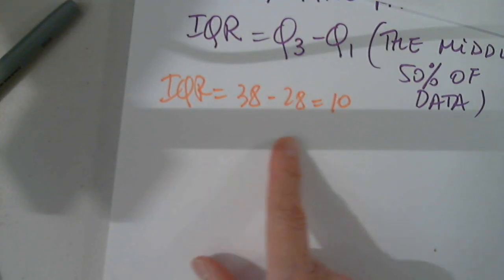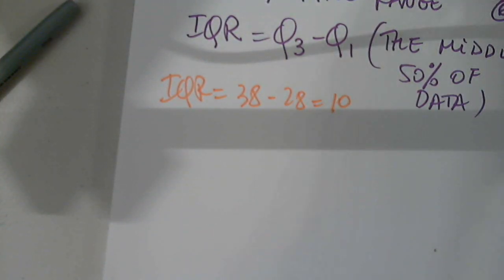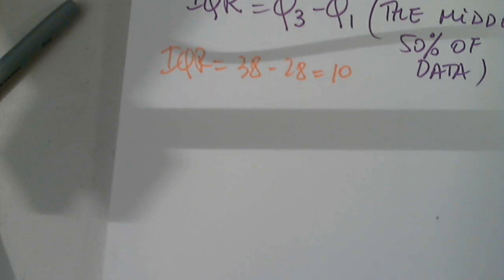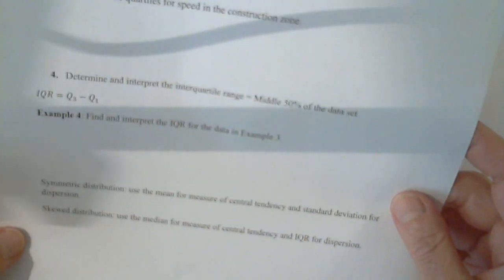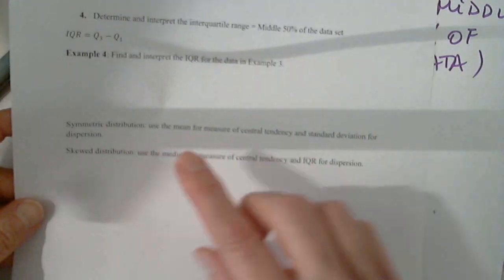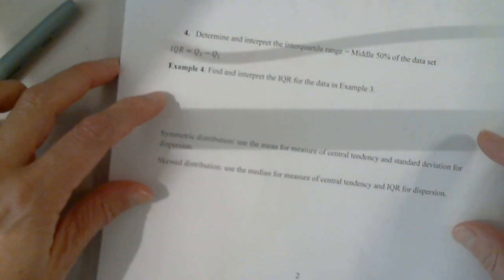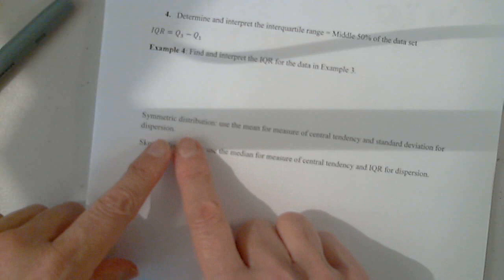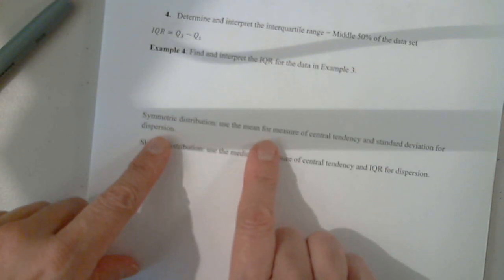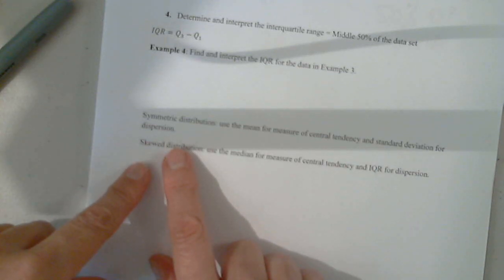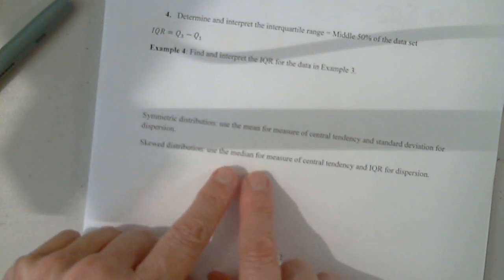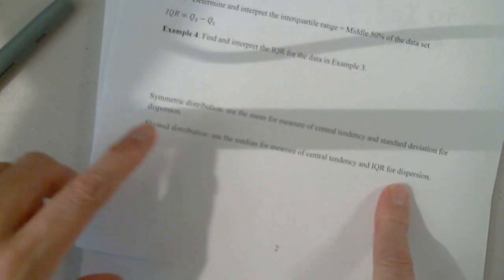So, any questions on the interquartile range? Any questions? Okay, so this is a comment that is very important for us to understand. For symmetric distribution, again, we know we use the mean for the measure of the central tendency and the standard deviation for the dispersion. But for skewed distribution, we use the median and the IQR.